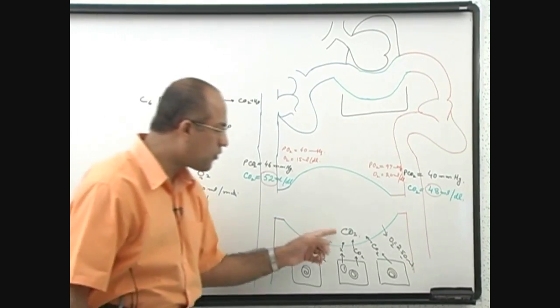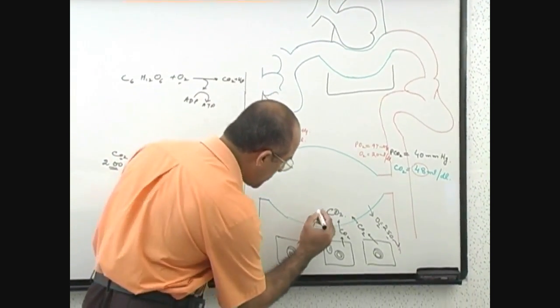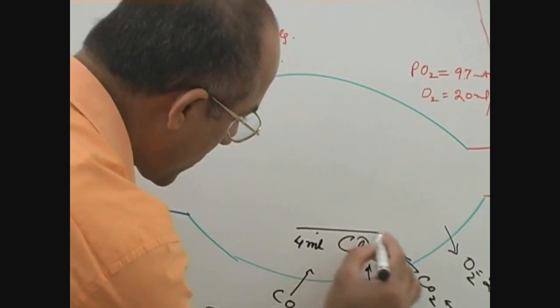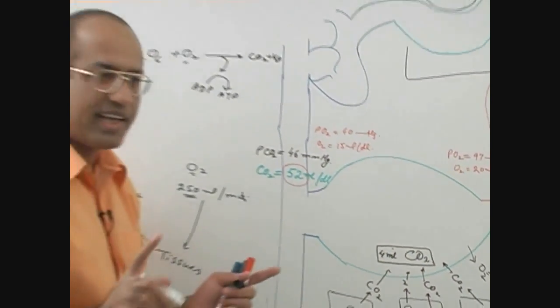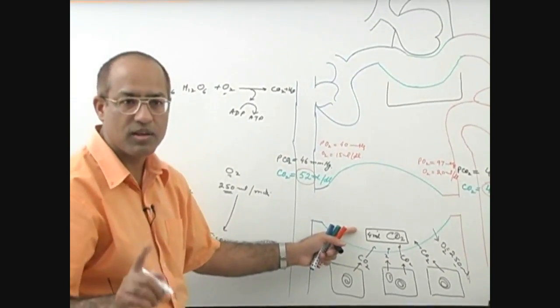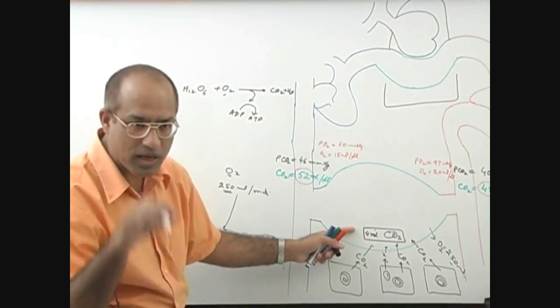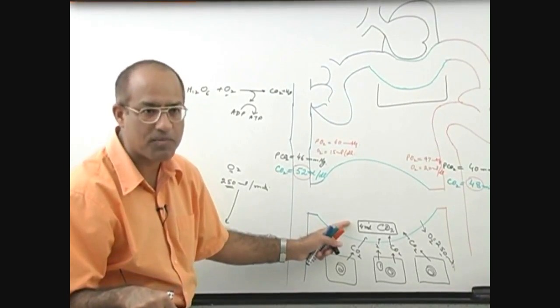The question is, this 4 ml which is added over here, how is it really transported? I've already mentioned all of that cannot be transported in the gaseous form. You have to keep it dissolved, and if you keep it all dissolved you need very high pressures. So all of that even cannot be transported in dissolved form. So what really happens?